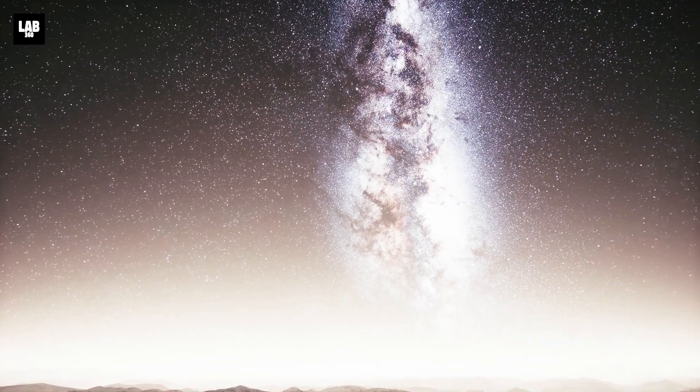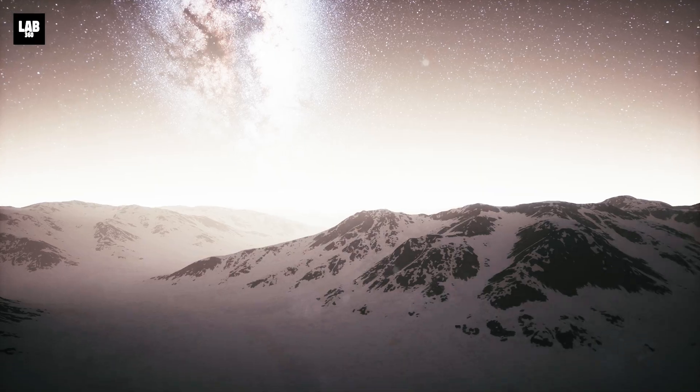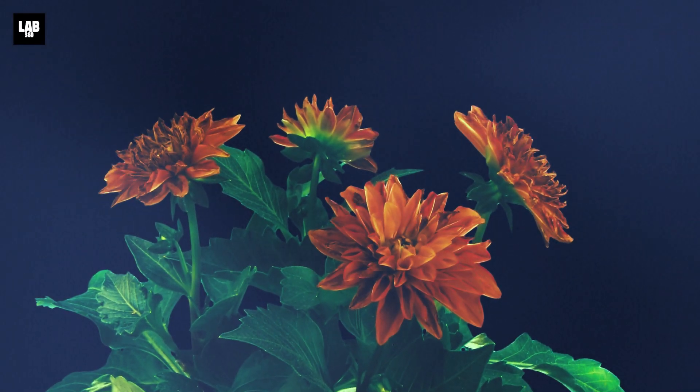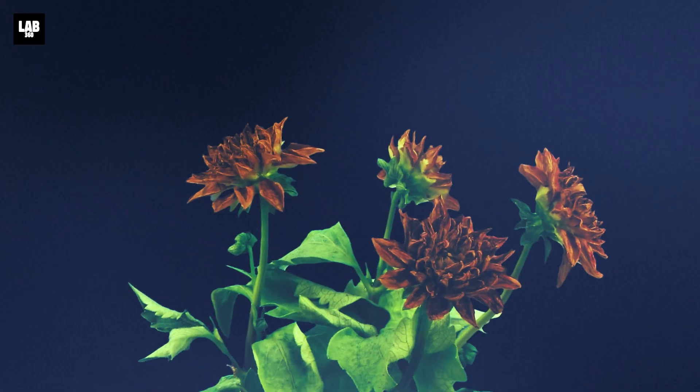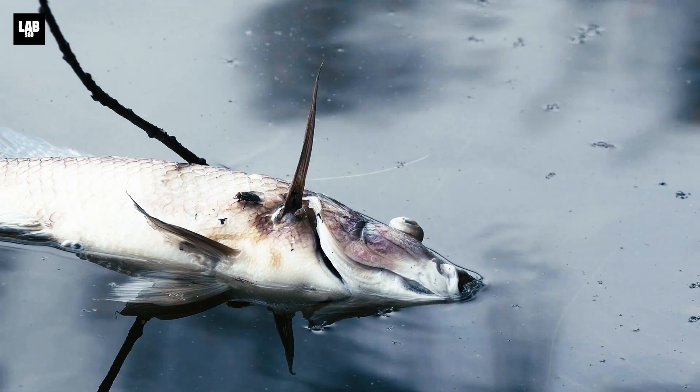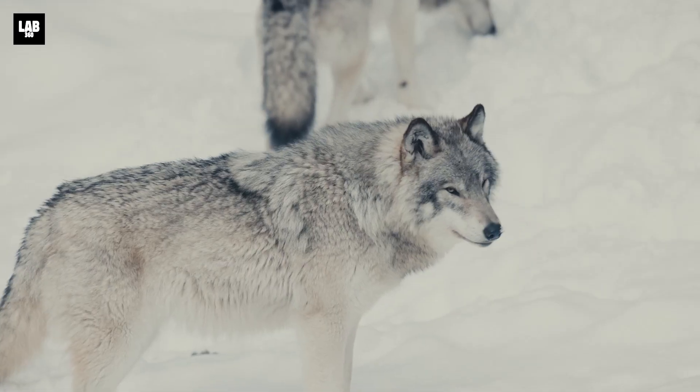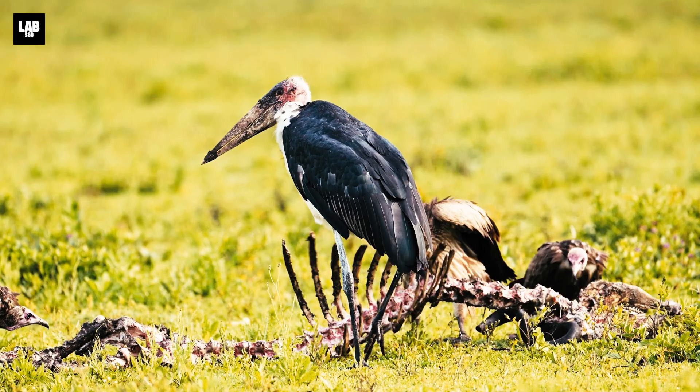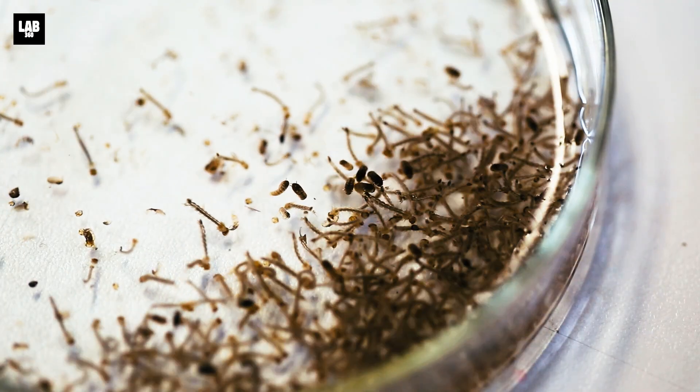Life on land would definitely struggle to adapt in the absence of the sun. Plants, dependent on photosynthesis, would start dying within days. This domino effect would collapse ecosystems. Herbivores would run out of food, and predators wouldn't be far behind, leaving behind just scavengers and parasites who also would die out with time.